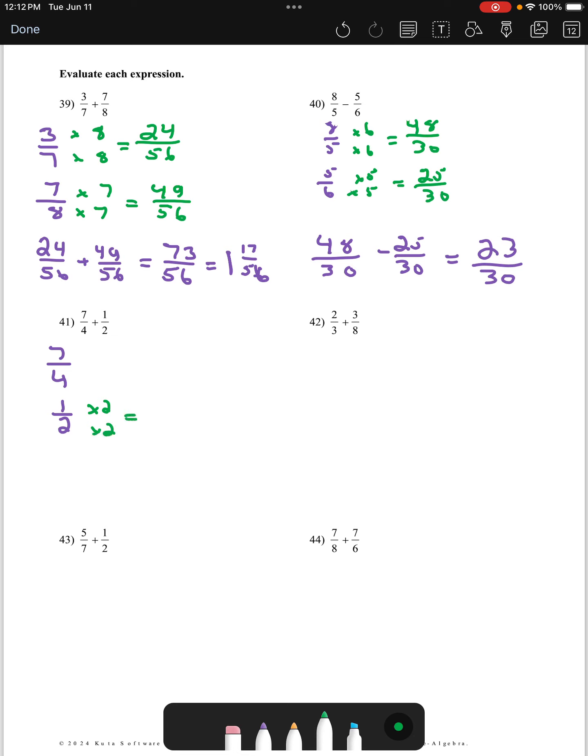Number 41, the smallest thing that 4 and 2 can agree to become is 4. Well, 7/4 is good then. We just have to adjust our second fraction to speak the same language. If we double the numerator and denominator, we get 2/4. So we have 7/4 plus 2/4. That's going to be 9/4. We can take two 4s away from 9. When we do that, we're going to have 2 and 1/4.